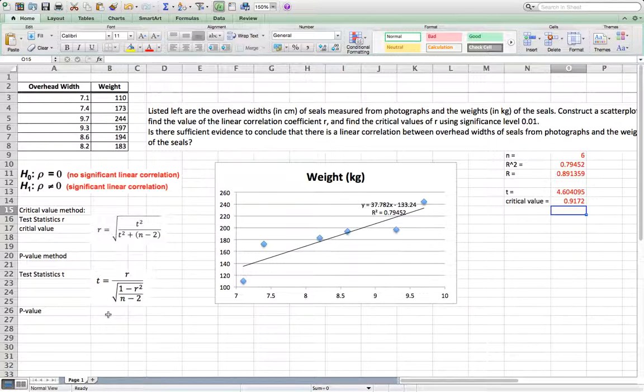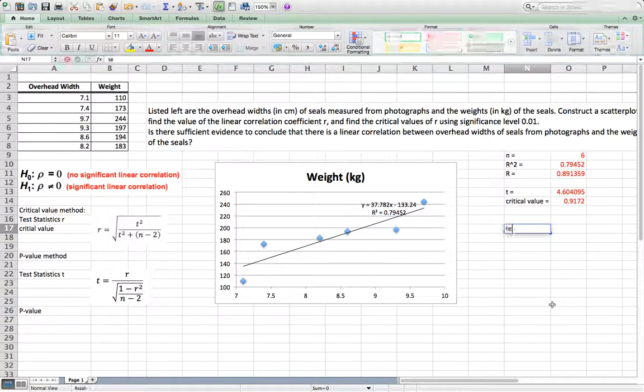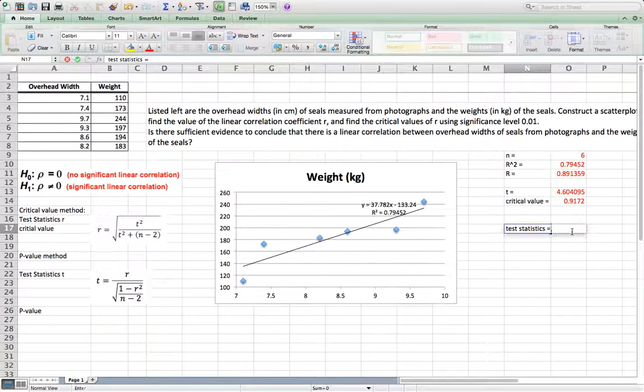Now, if you want to use p-value, what will you do? Since you already calculated r, then I need to calculate test statistic. This test statistic will equal, I will use this formula, which is r. r is in O11, divided by square root, 1 minus r square, r square is O10. Then divide by O9 minus 2. That's your test statistic.